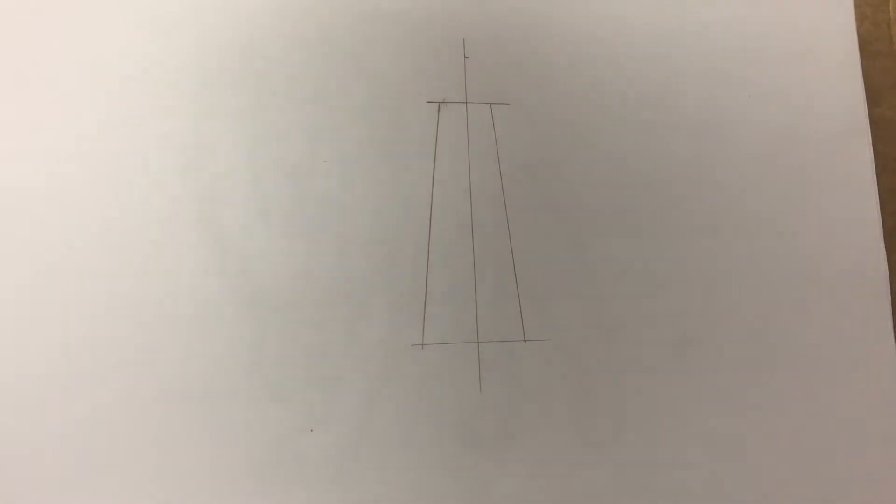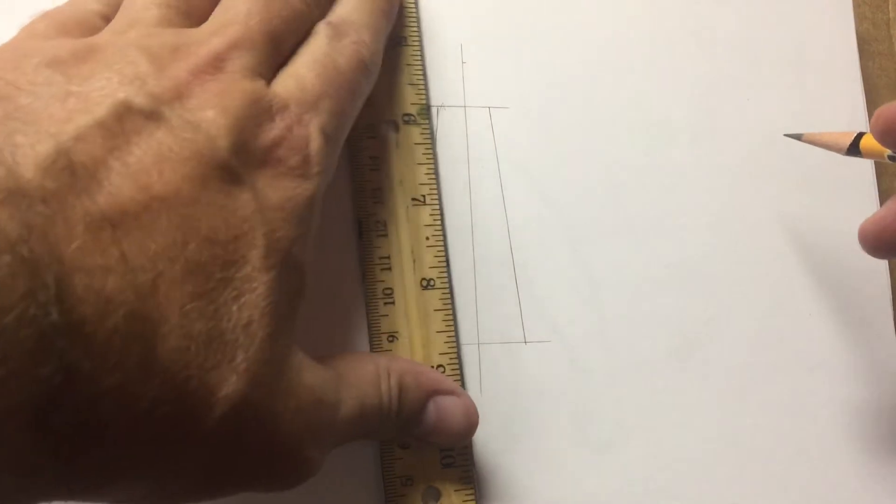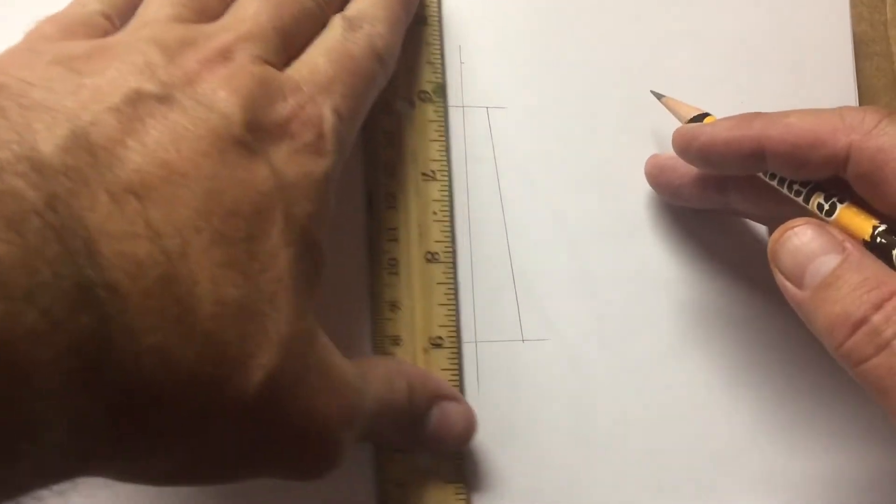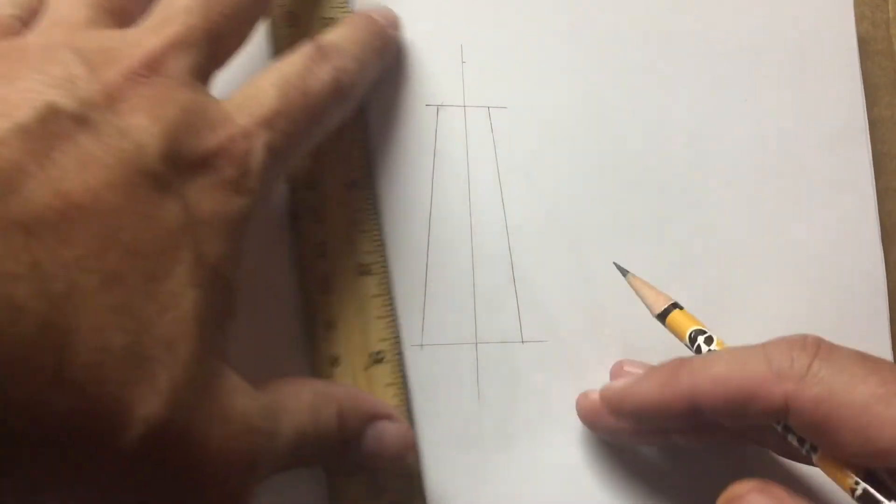We're going to start with one line right down the middle of your paper, very light, right there.